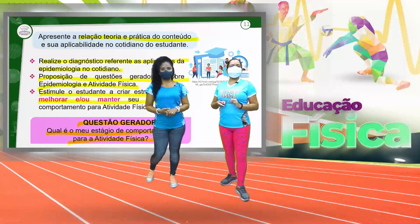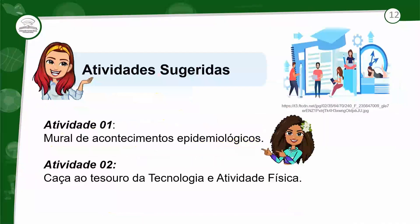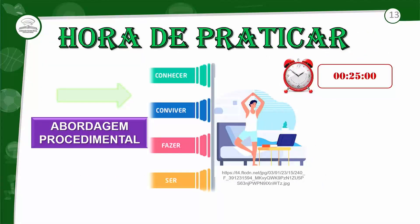Vamos seguir para o segundo momento, que é a nossa parte de aplicação. A gente tem atividades sugeridas. Temos duas atividades: a primeira é o mural de acontecimentos epidemiológicos, e a segunda é um caça ao tesouro da tecnologia e atividade física — o desafio. Na hora de praticar, que é o momento da abordagem procedimental, a gente está sugerindo um tempo de 25 minutos.